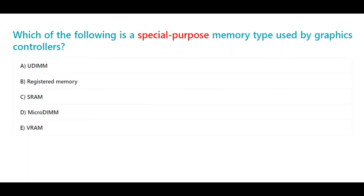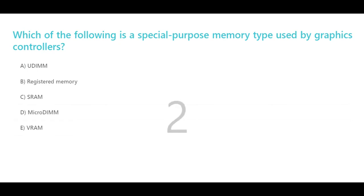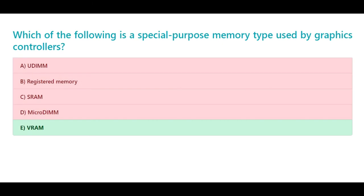Which of the following is a special purpose memory type used by graphics controllers? A. UDIMM. B. Registered memory. C. SRAM. D. MicroDIMM. E. VRAM. The correct answer is E. VRAM.